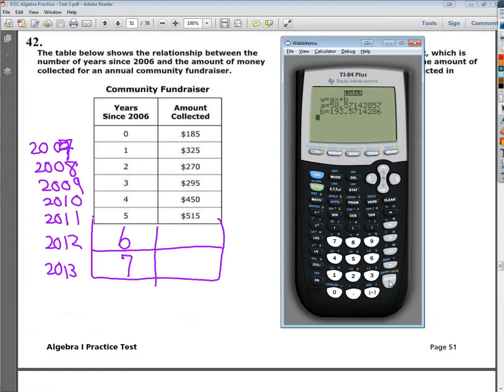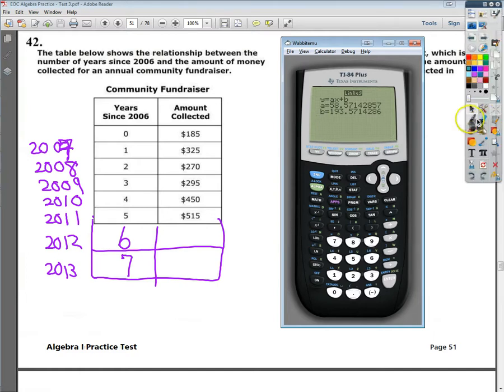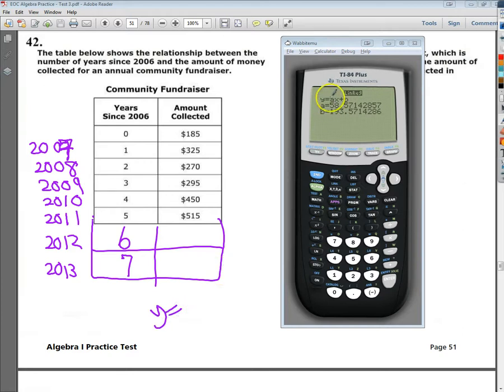And I get Y equals 58.57. I'm just using the information. I'm plugging in the values. So I'll do 58.6-ish and be lazy. And then plus 193.6. Now that's my line of best fit.